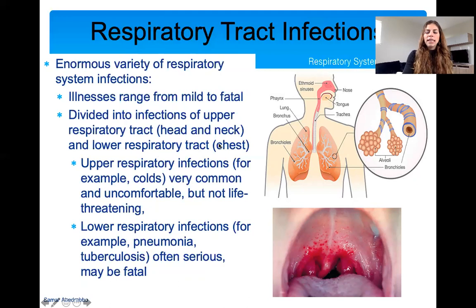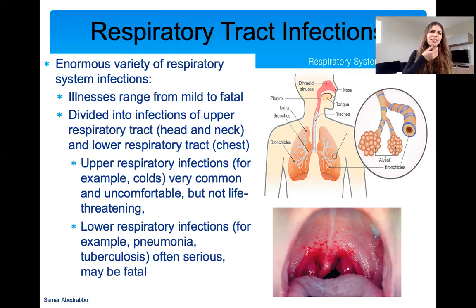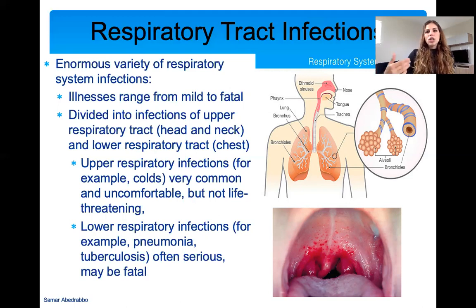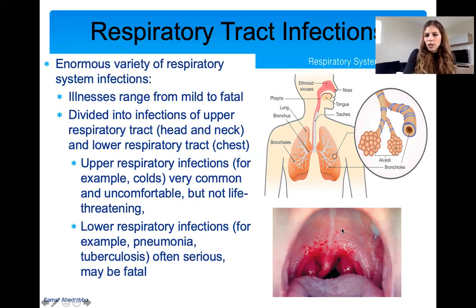These infections are divided into upper respiratory tract infections and lower respiratory tract infections. Upper respiratory tract infections affect your nose, mouth, and throat area — this is like when you're really congested. Lower respiratory tract infections affect your lungs. Many infections can start off as only upper respiratory tract infections and remain there in some people, but in others they can turn into lower respiratory tract infections and infect the lungs, which are usually the more serious and potentially fatal ones.